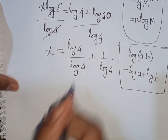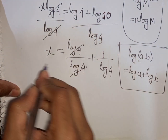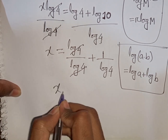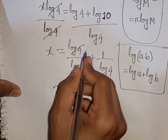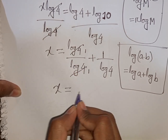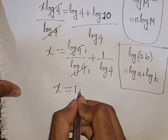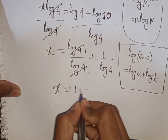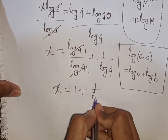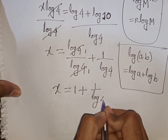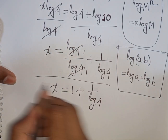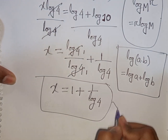We can split this as log 4 over log 4 plus log 10 over log 4. Since log 4 over log 4 cancels to 1, and log 10 equals 1, we get x is equal to 1 plus 1 over log 4. This is the final answer.